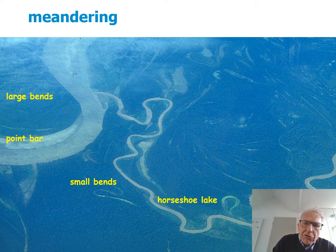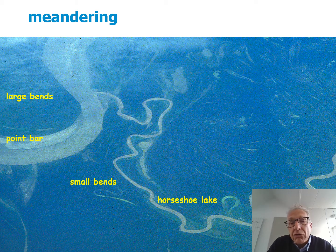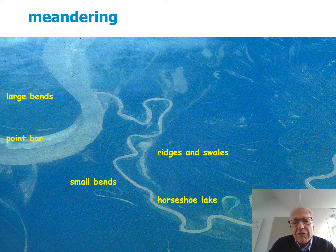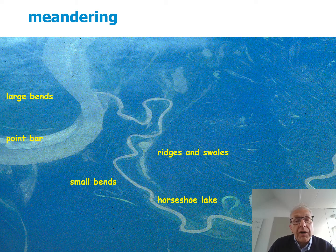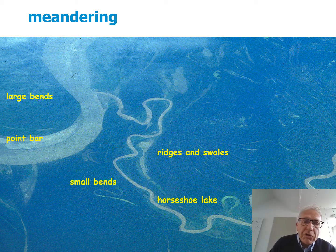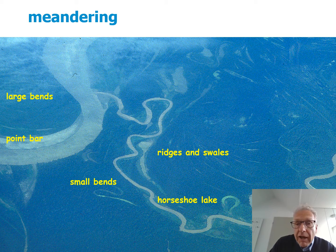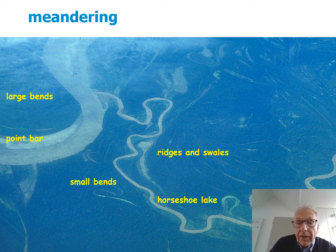Looking further in the terrain, you see not only horseshoe lakes related to bends in the smaller river, but also ridges and swales that suggest they have been parts of large river bends, like the one in the upper left. This suggests that in a distant past, the large river actually followed the course now occupied by the smaller river, showing how dynamic morphodynamic changes can be.